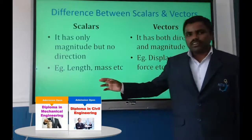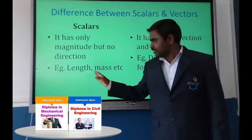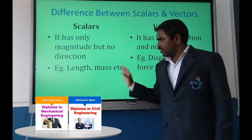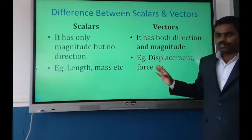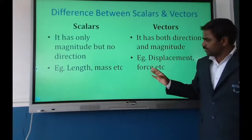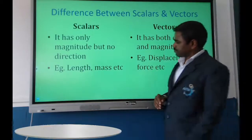Examples of scalar quantities include length and mass. Examples of vector quantities include force and velocity.